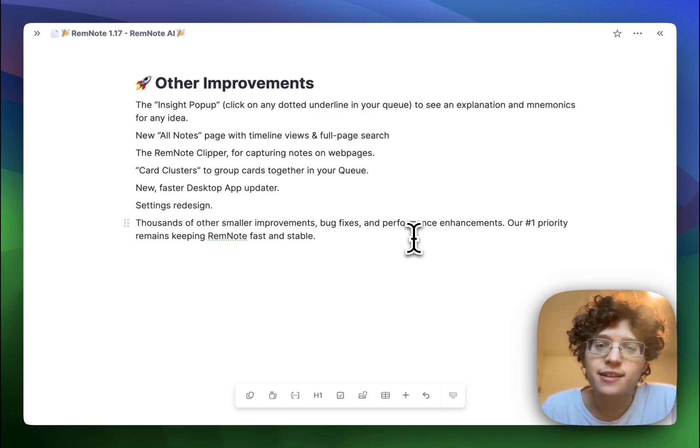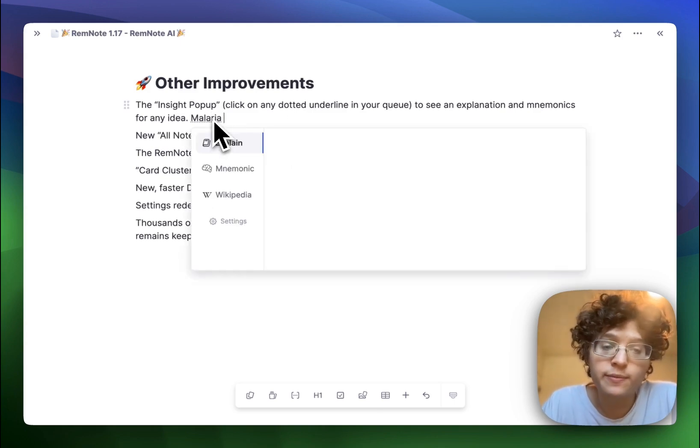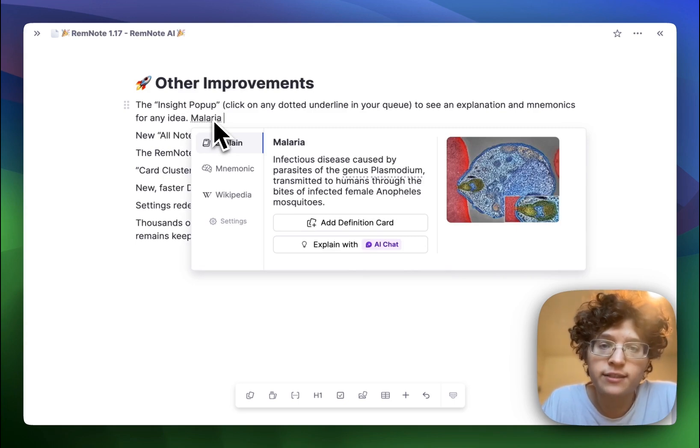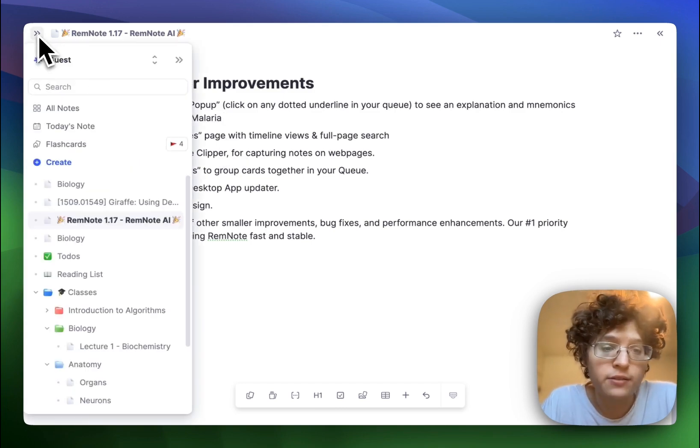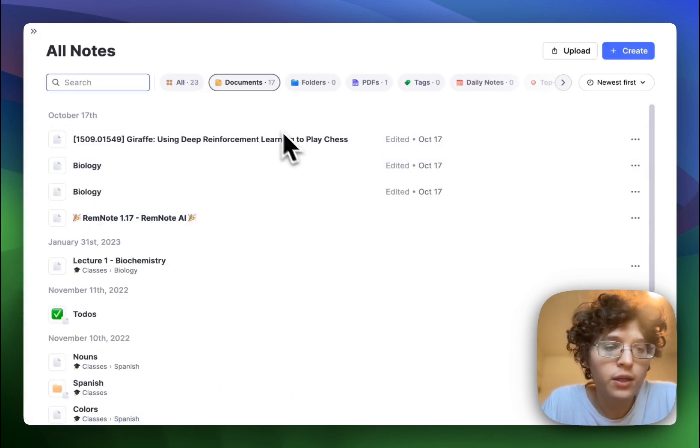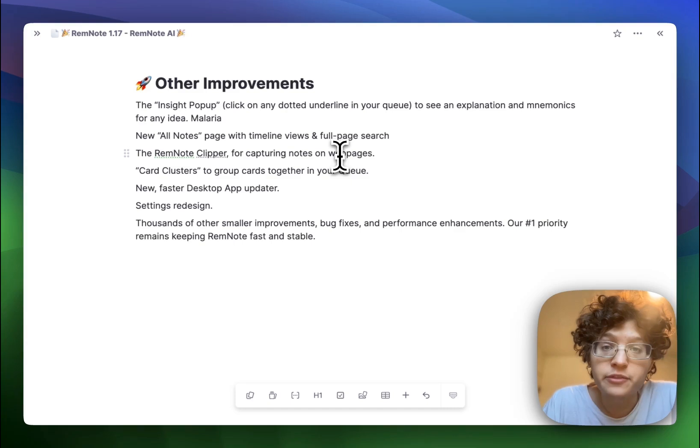Finally, we've added a ton of other improvements in small polish since our 1.16 release. We've added the new Insight pop-up, which automatically underlines technical words in your editor and queue and lets you immediately see the explanation, mnemonics, and Wikipedia and Amboss for them. We've built out a totally new All Notes page, which has a timeline view, full page search, and easier manipulation. We've released the new RemNote Clipper, which lets you easily capture notes and write your own notes on webpages, as well as generating those cards.